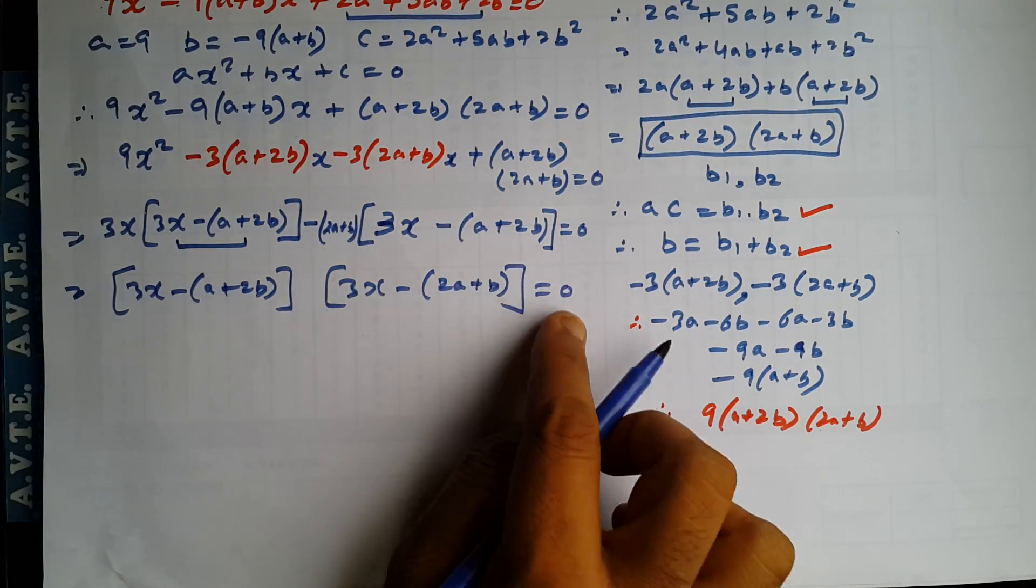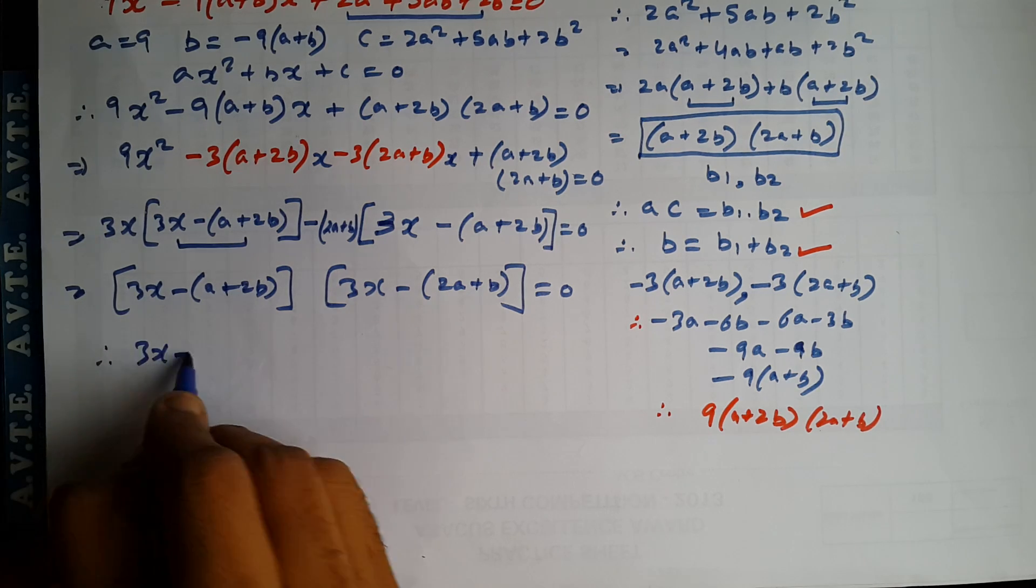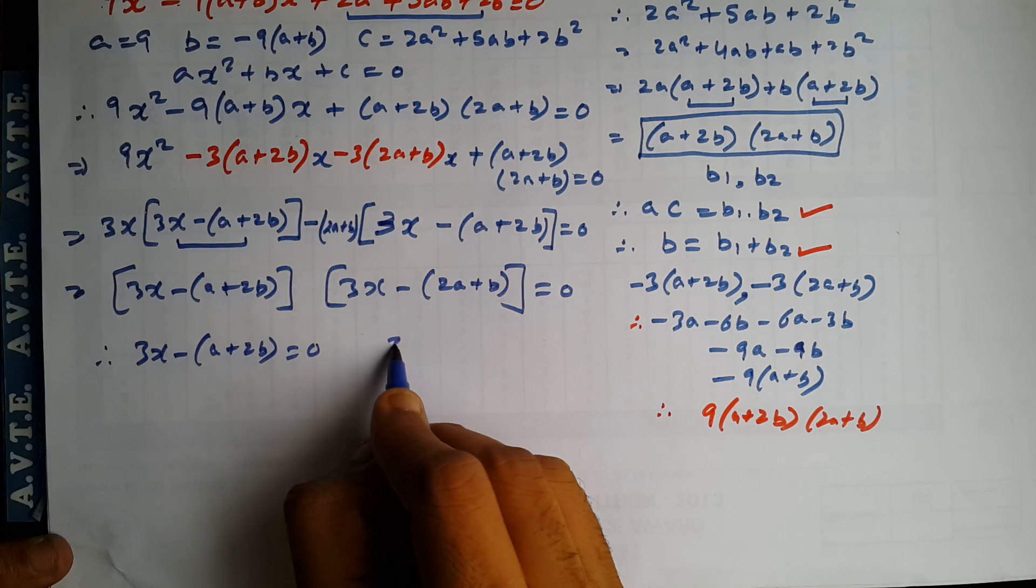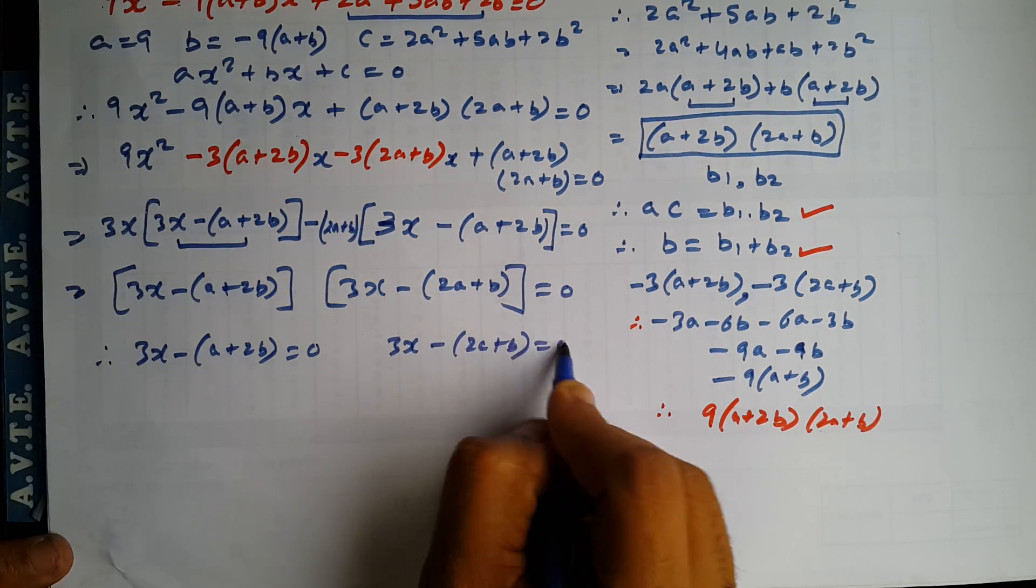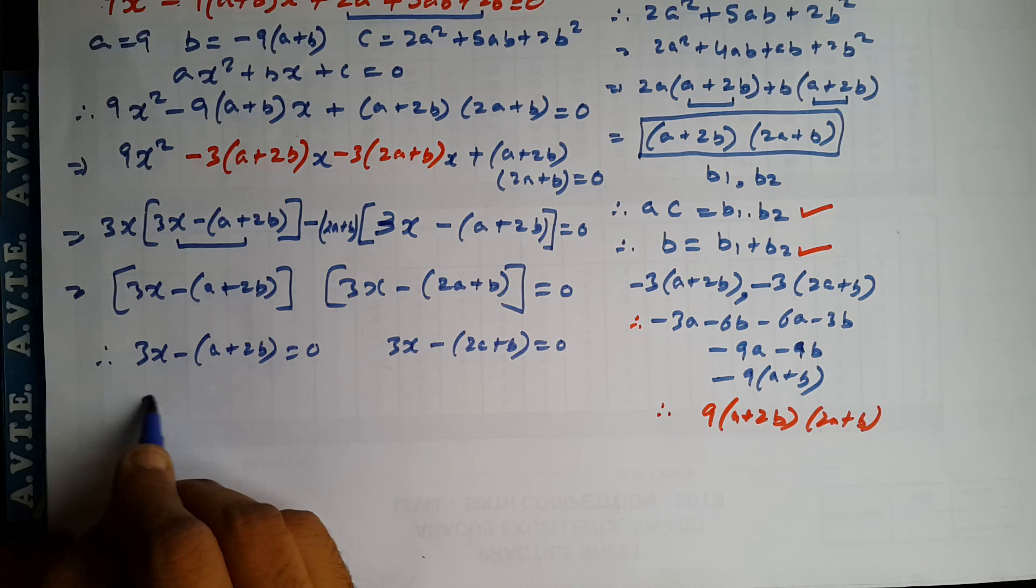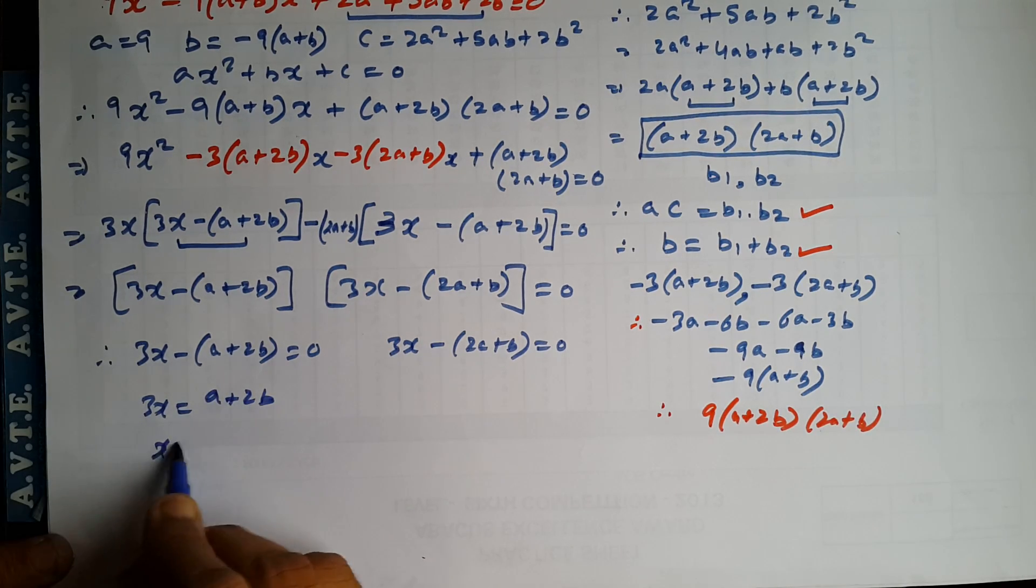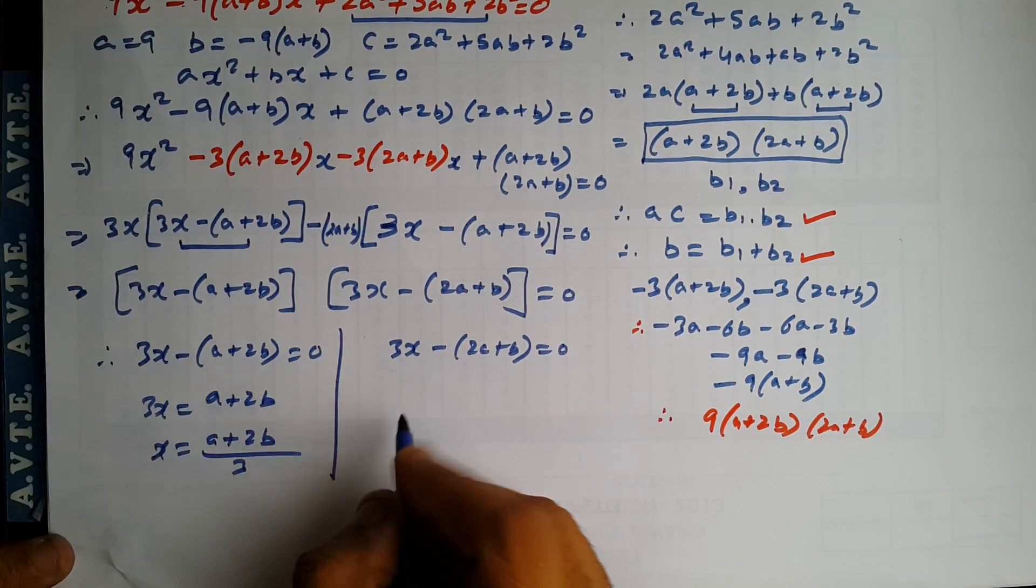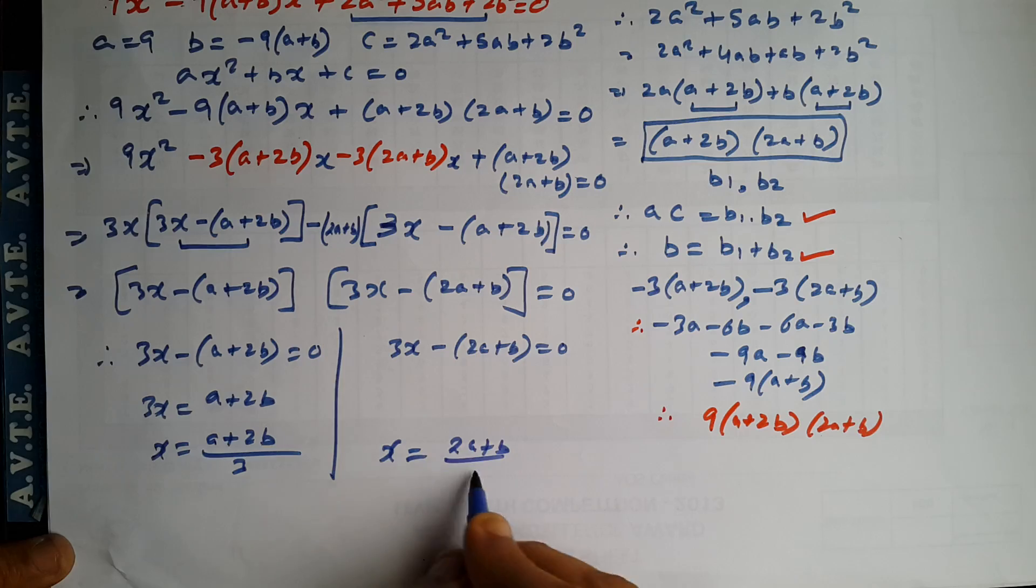Now again the product of two things is 0. One of them is 0. So the answer is 3X is equal to A plus 2B. So X is equal to A plus 2B by 3. And here X is equal to 2A plus B by 3.